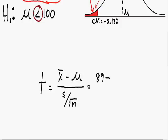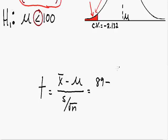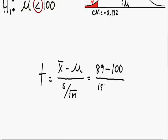So x-bar equals 89, and this is subtracted by the population mean mu, which equals 100. This is all divided by the standard deviation of the sample. To save time, I've given this to us already — the standard deviation of the sample is 15.81. This is divided by the square root of the sample size n, which is 5. Plugging all of this into the calculator, we get a value of negative 1.56.